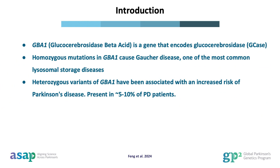Glucocerebrosidase beta acid 1, commonly referred to as GBA1, is a gene that encodes the enzyme glucocerebrosidase, or GCase. Initially associated with Gaucher disease — one of the most common lysosomal storage disorders — GBA1 has also been implicated in the pathogenesis of Parkinson's disease. Early observations by clinician Sidransky revealed a higher incidence of Parkinson's disease among family members of Gaucher disease patients, which led to the identification of certain GBA1 variants that increase susceptibility to PD.